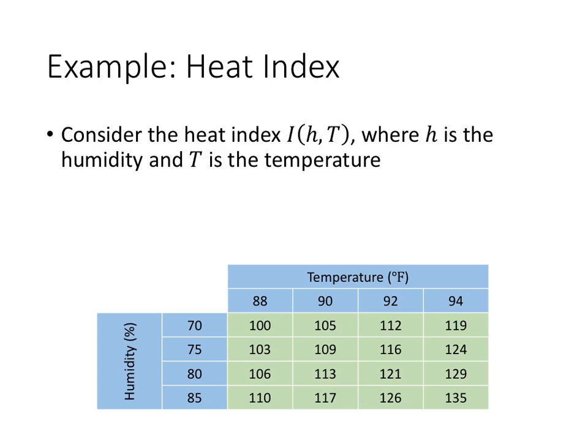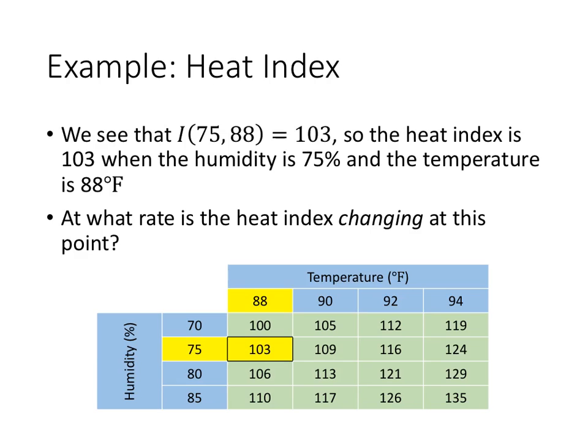In this example, we have the heat index, which is a function of two variables: the humidity percentage and the temperature. If we look at the point I of 75, 88 equals 103, that tells us the heat index is 103 when the humidity is 75% and the temperature is 88 degrees. So what if we wanted to know the rate at which the heat index is changing at that point?